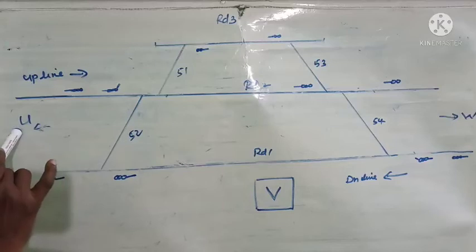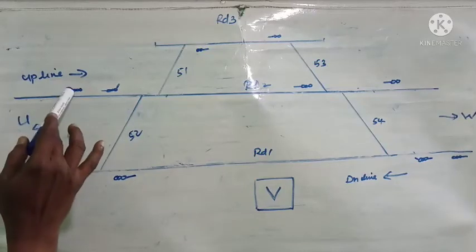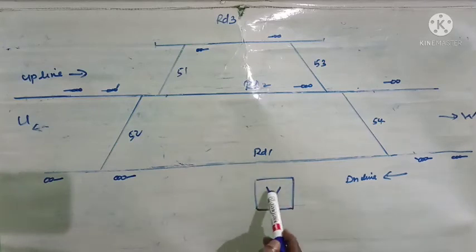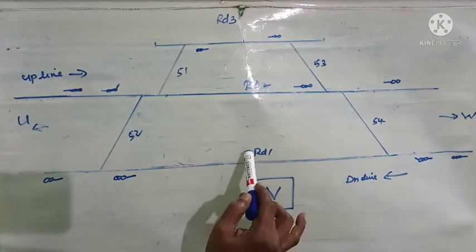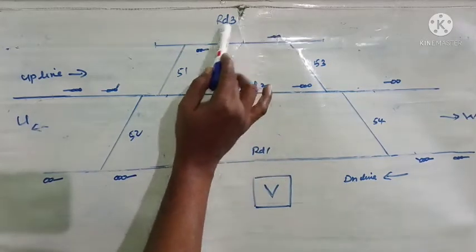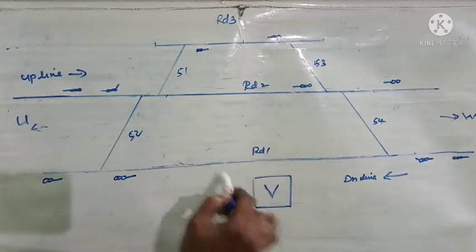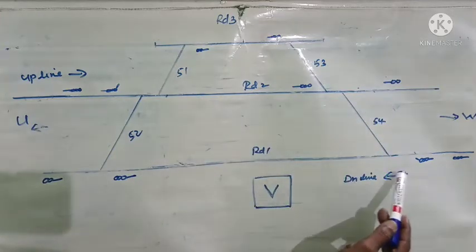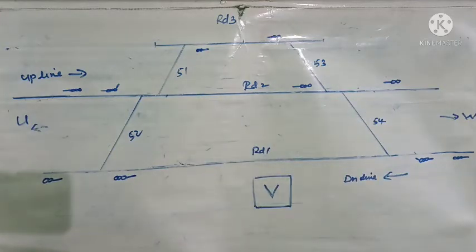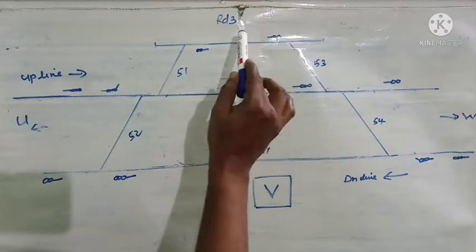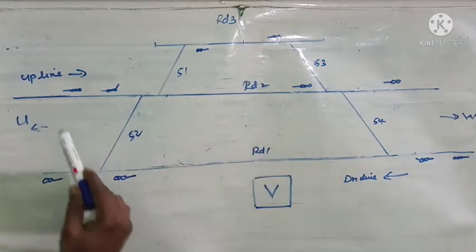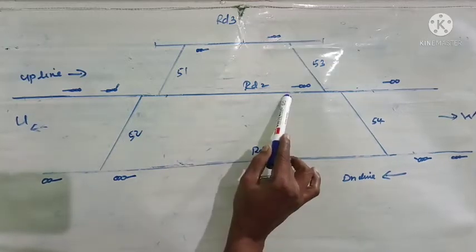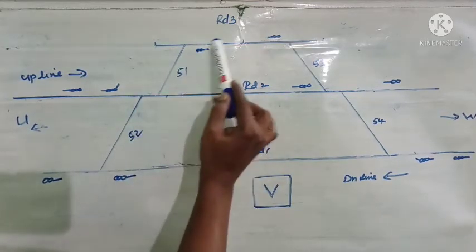The train is coming from station U and approaching the distance signal of station V. Here is the station master's office. Station V has road 1, road 2, and road 3 — three roads in total. Road 2 is up line, road 1 is down line, and road 3 is a common loop. If the train comes from the up line, it can be received on road 2 and also on road 3.